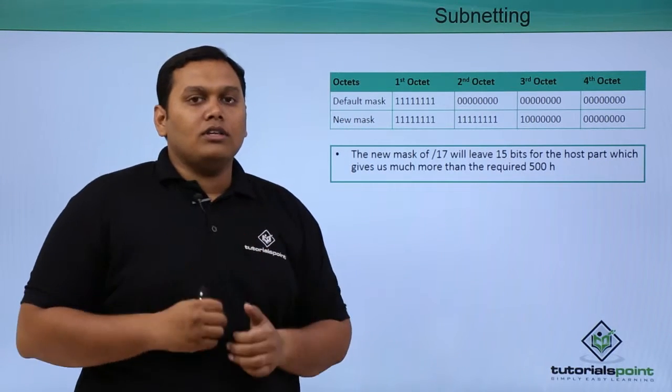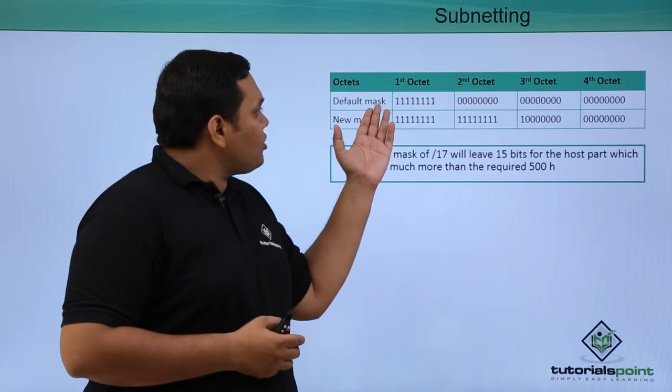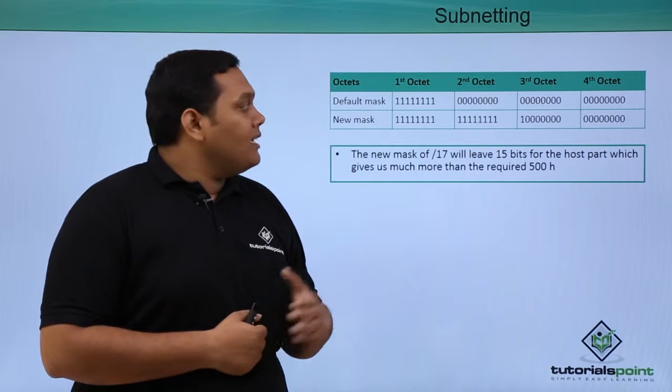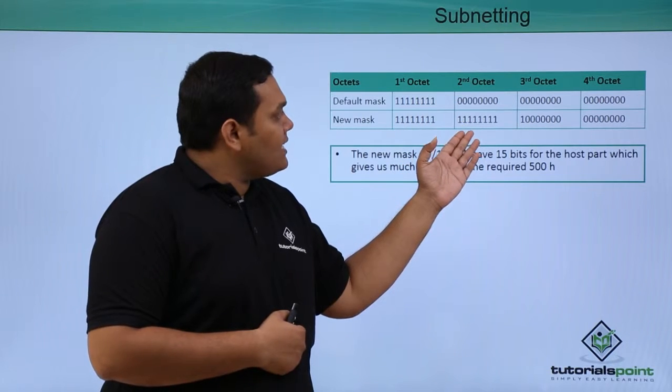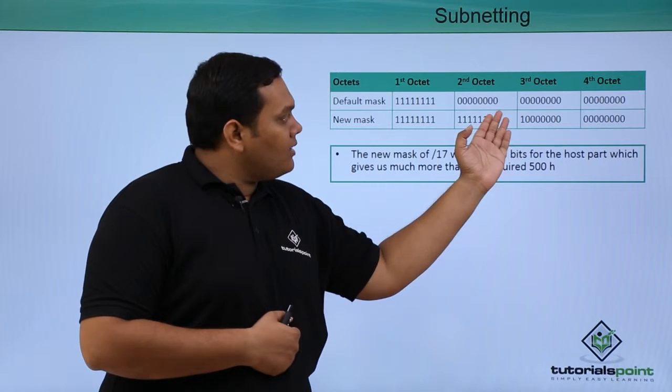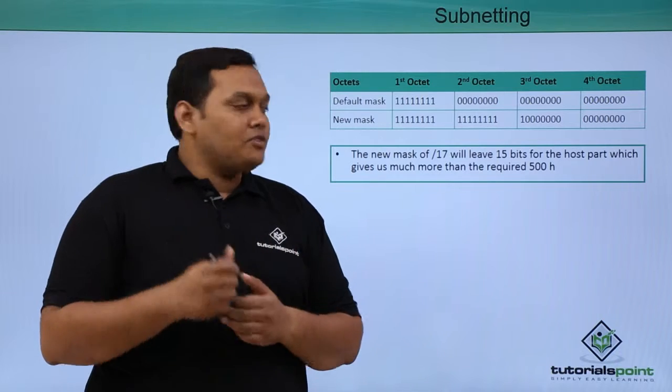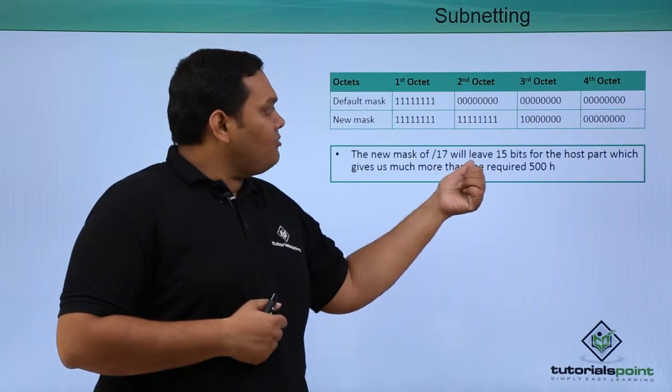In this diagram you can see clearly the octets, the default mask, and the new mask created by borrowing network bits to perform subnetting. The first octet is the same, but in the second octet they borrowed 8 bits, and in the third octet they borrowed the 9th bit also.